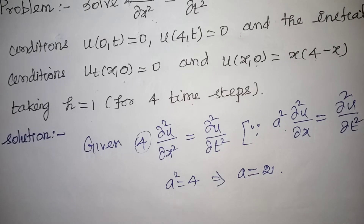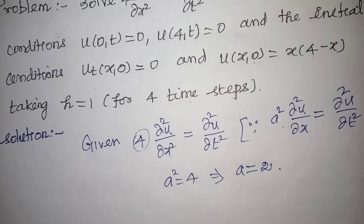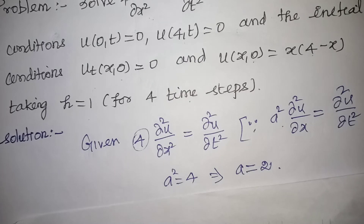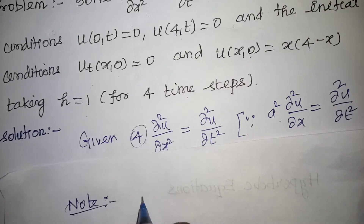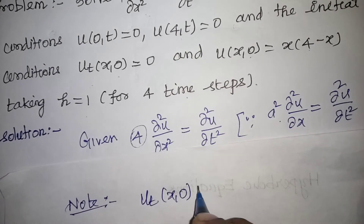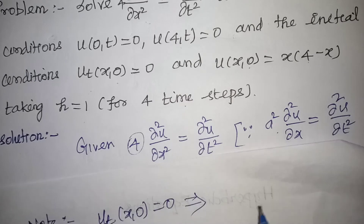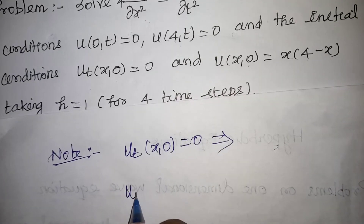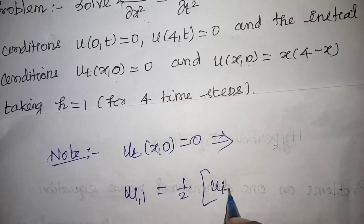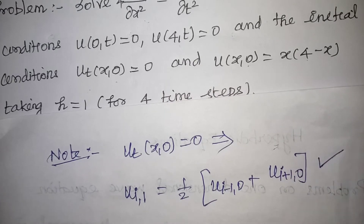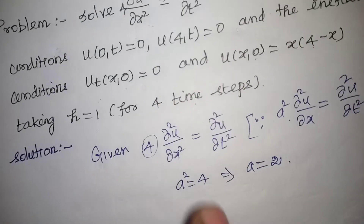An important node point arises from the initial condition u_t(x,0) = 0. This directly gives the formula: u(i,1) = (1/2)·[u(i−1,0) + u(i+1,0)], which is used for computing the first time-level values.